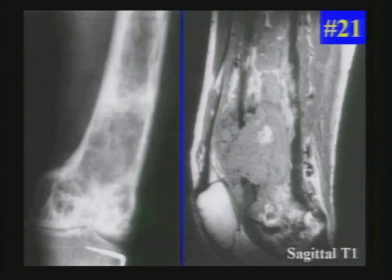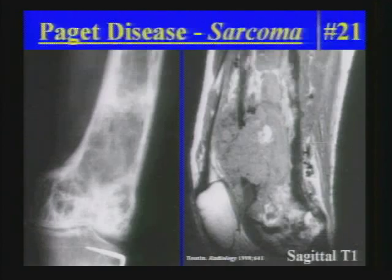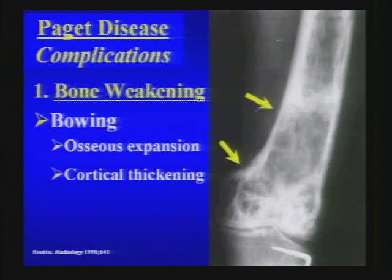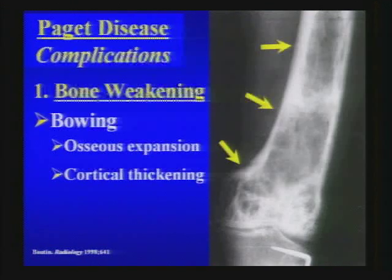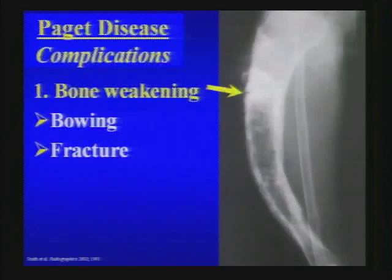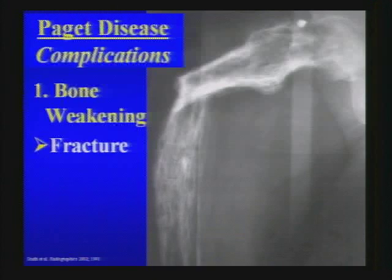Paget's disease has complications to look for whenever you make the diagnosis. The bone is weakened despite appearing dense, resulting in bowing with the osseous expansion. With bowing and weakening, insufficiency stress fractures occur typically at the convex aspect of the bone. Although they often only go partway through the bone, they may extend all the way through.